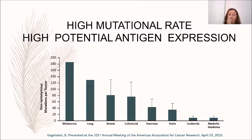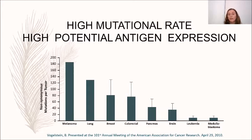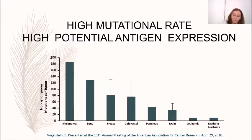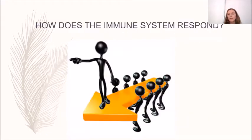For example, in this slide we see that melanoma has a high mutational rate and high antigen expression, and is one of the first tumors treated with immunotherapy. But how does the immune system respond?